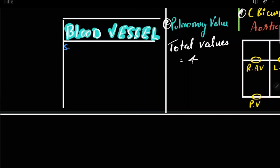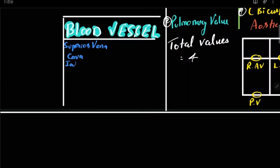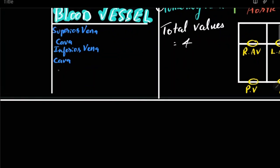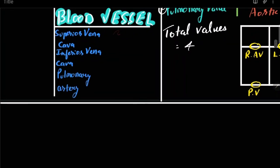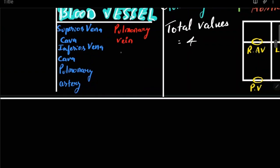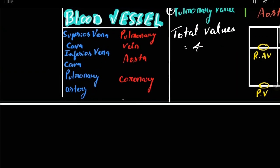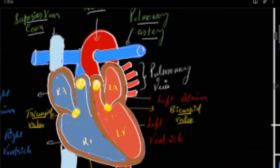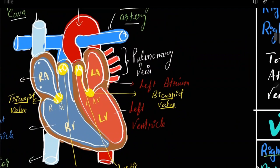On the right side, in blood vessels you have your superior vena cava, inferior vena cava, and the pulmonary artery. On the left side you have pulmonary veins, the aorta, and coronary artery branches.